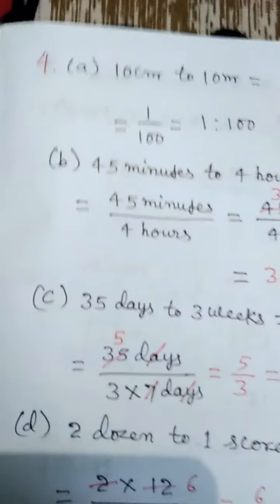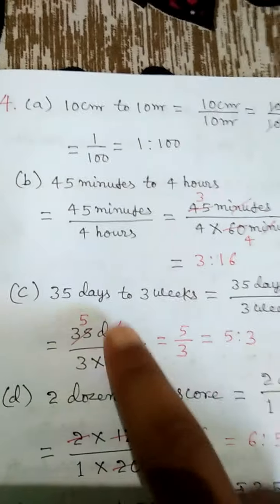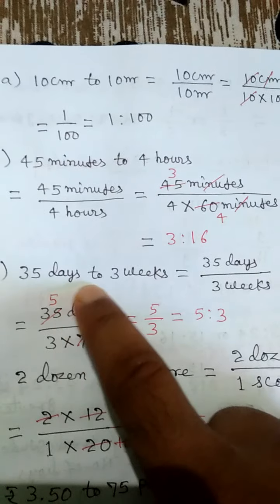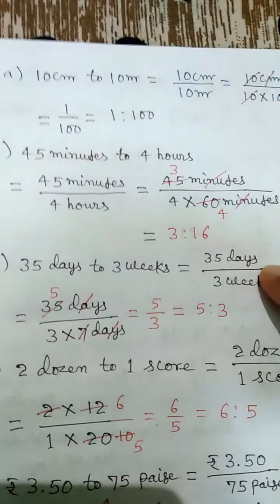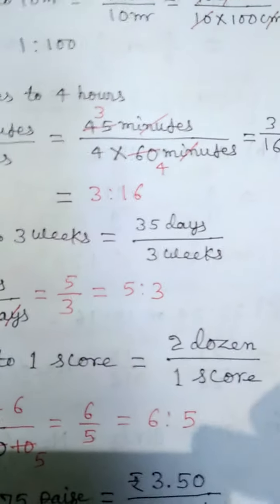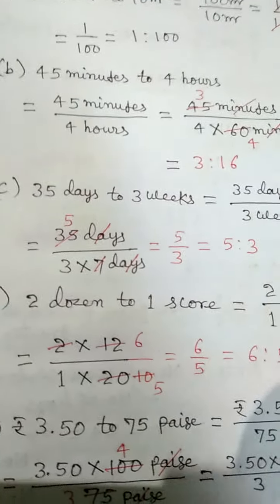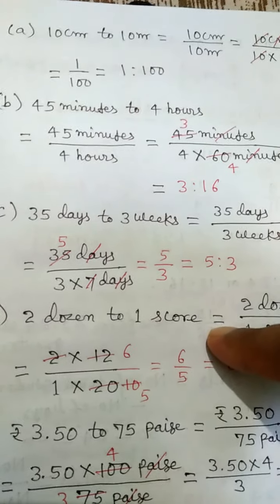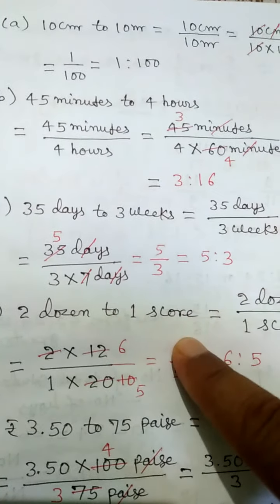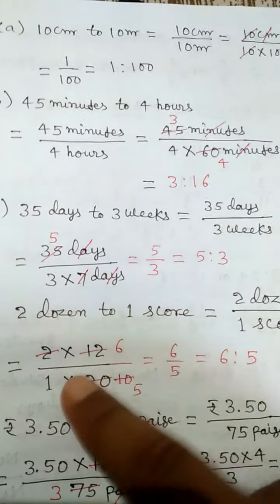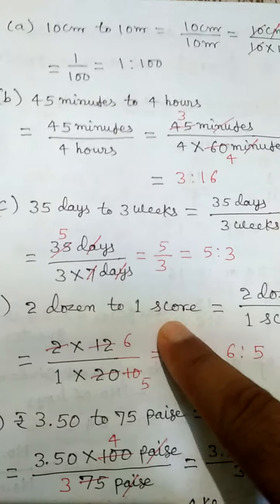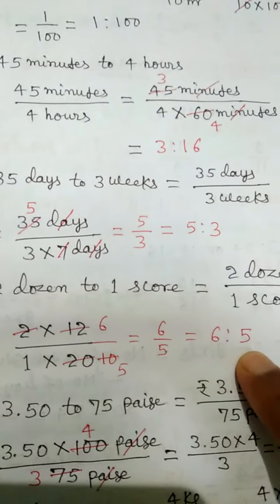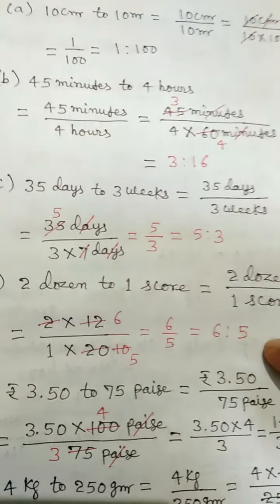Another example: 35 days to 3 weeks. Here both are in different units, so weeks are changed into days so both terms come into the same unit, and then we can find the ratio. Another example: 2 Dozen to 1 score. 2 Dozen contains 2 times 12, and 1 score contains 1 times 20. In this way, we get 24 by 20, which simplifies to 6 by 5, that is 6 is to 5 in Ratio.